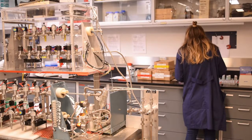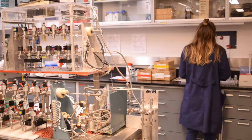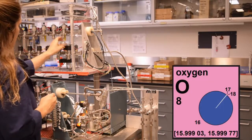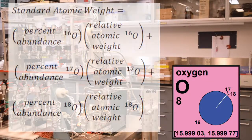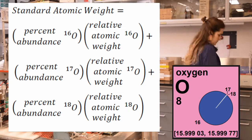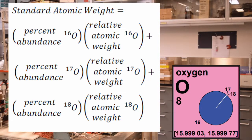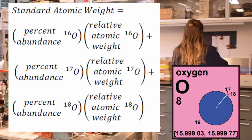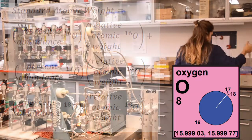Once the oxygen isotopic composition of a specimen has been determined, the atomic weight is easily calculated from the relative atomic masses of the stable isotopes of the element: oxygen-16, oxygen-17, and oxygen-18 for oxygen atomic weights.